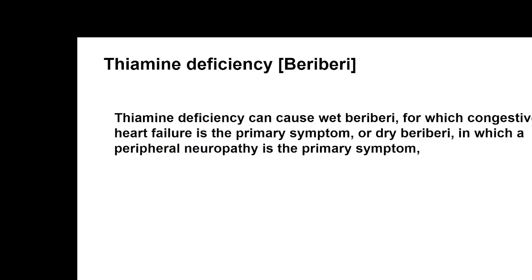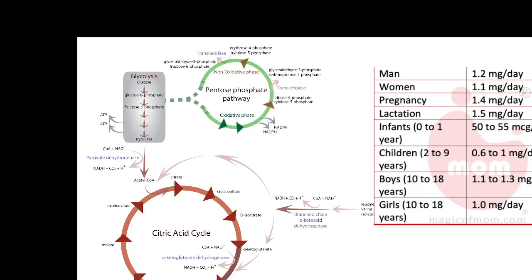Thiamine deficiency, or beriberi, can cause two forms: wet beriberi, where congestive heart failure is the primary symptom, and dry beriberi, where peripheral nerve involvement is the primary symptom. Thiamine plays an important role in glucose metabolism, essential for both the pentose phosphate pathway and the citric acid cycle. If thiamine deficiency occurs, it results in impaired glucose metabolism and reduced energy production.